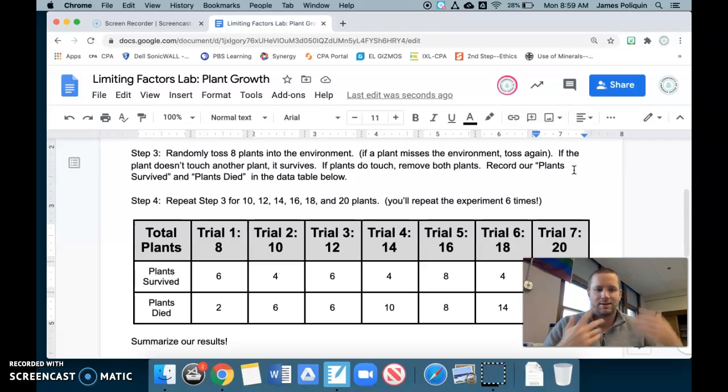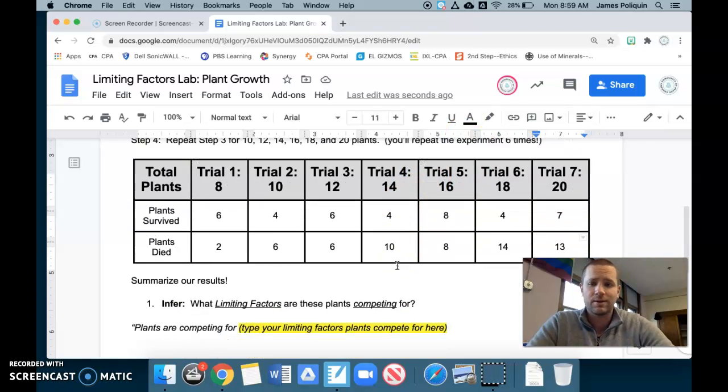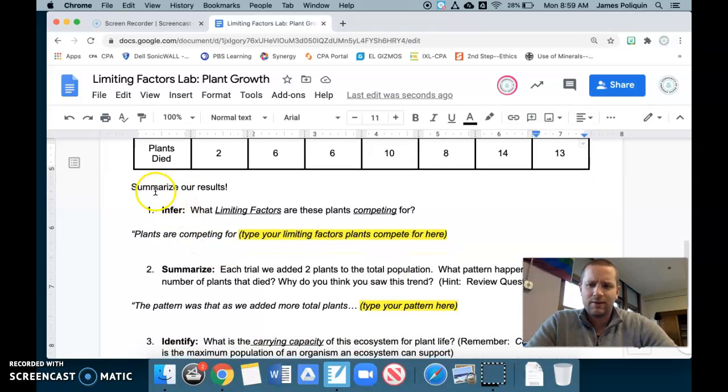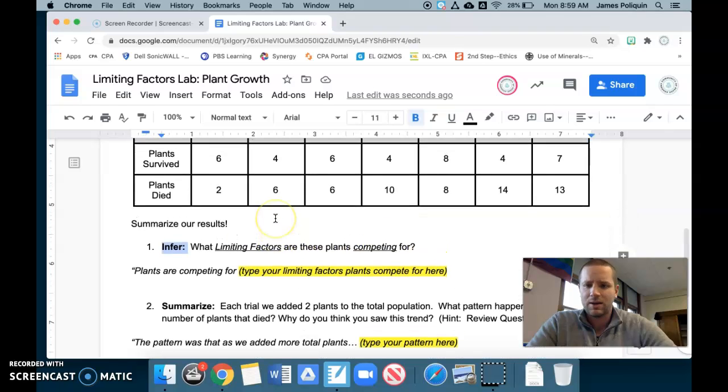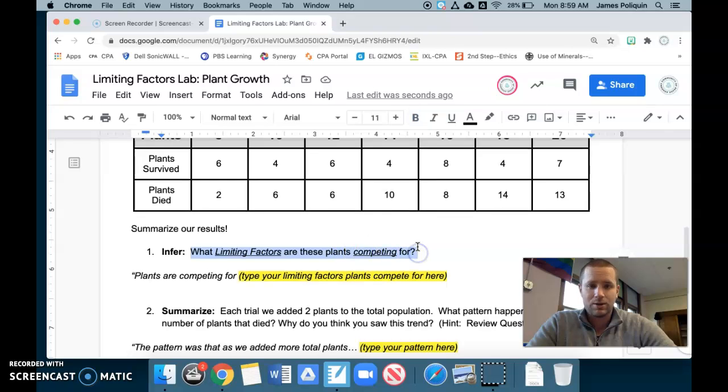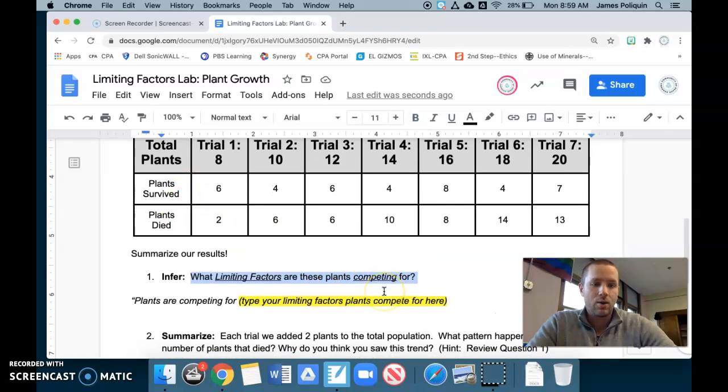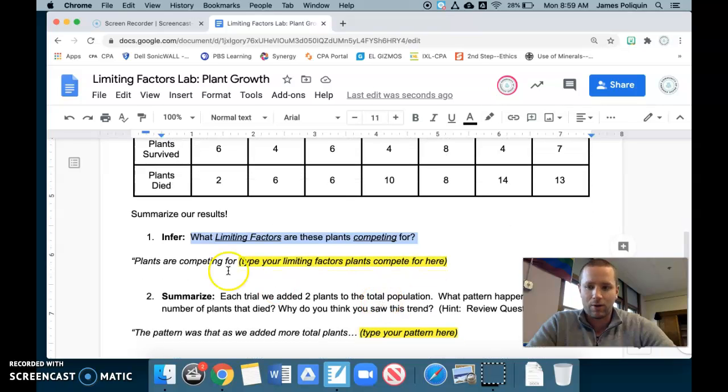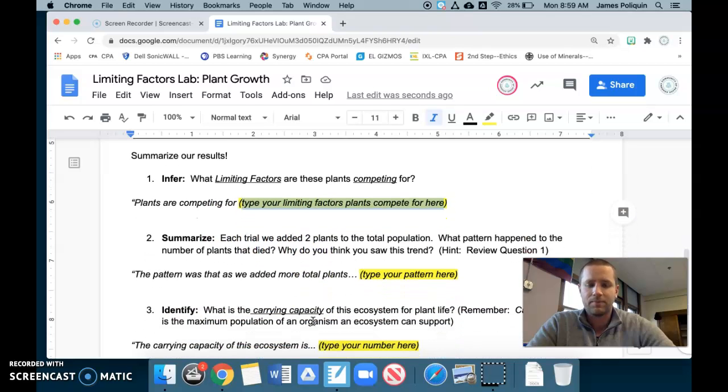And from our experiment, let's kind of summarize what we did today and what we've learned over the past couple of days. So number one, for summarizing our results, we're going to make an inference. An inference again is we're trying to explain why we're seeing certain observations. So what limiting factors are these plants competing for? So our plants are living or dying. Why? What are they competing for? And so in your sentence, plants are competing for, what are some of the things that plants compete for? Type them in that space there. Pause this video if you need to.